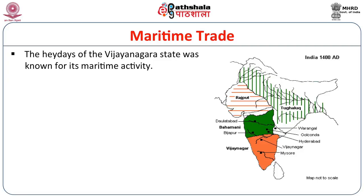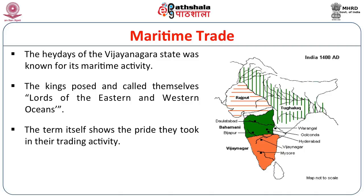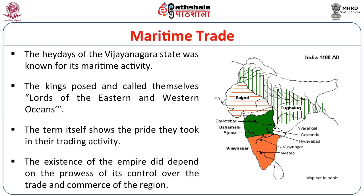We have to start the economic changes with maritime trade. The Vijayanagara Empire occupied a very important position in the peninsula of India. That position could only be achieved by control of the maritime trade of the time, which the Vijayanagara rulers very efficiently did. The heydays of the Vijayanagara state were known for their maritime activity. The kings called themselves the lords of the eastern or the western oceans — the term itself showed the pride they took in these trading activities and the realisation of how important trading activities would be. The existence of this empire did depend on the prowess of its control over trade.